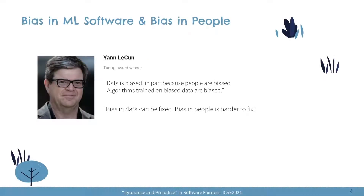Speaking of bias and fairness in machine learning software, it often makes us think of bias in people. The Turing Award winner Yann LeCun once said: data is biased, in part because people are biased. Algorithms trained on biased data are biased. And then he said: bias in data can be fixed, but bias in people is harder to fix.